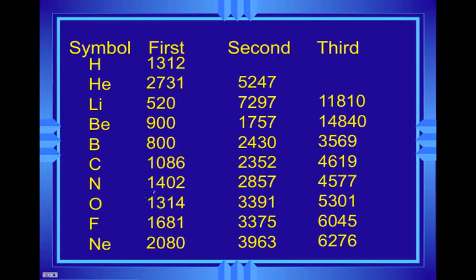As you can see here, let's just say we pick nitrogen, 1,402 kilojoules per mole to remove the first mole of electrons, 2,857 to remove the second, and 4,577 to remove the third. So you can see it can require quite a bit. I also want you to notice that this is an increase of maybe double. There's not these really large increases.